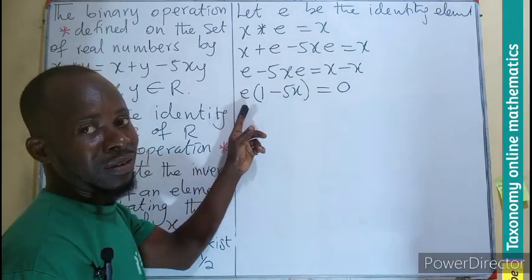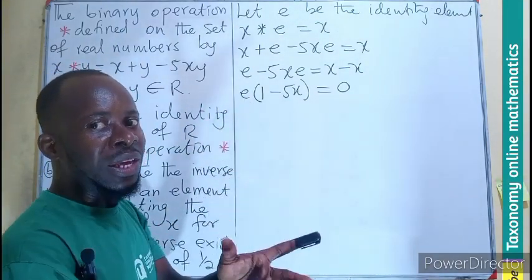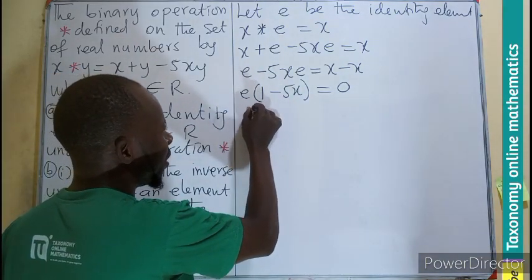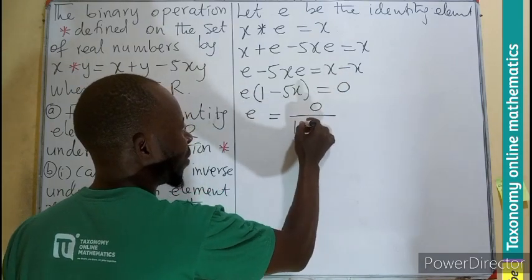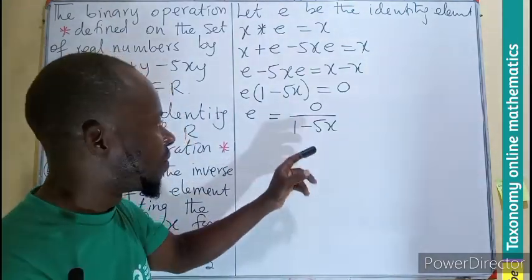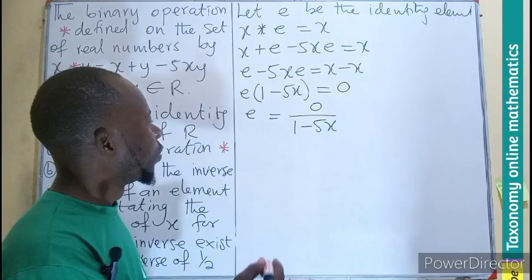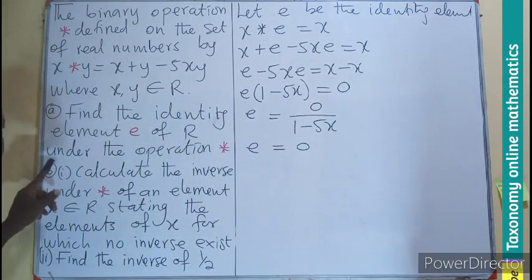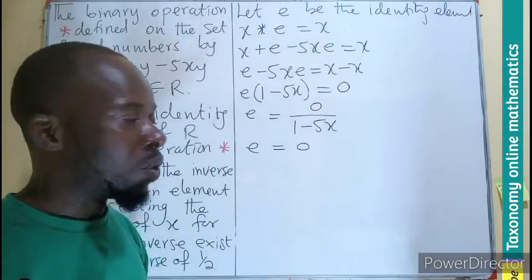Now, what do we do? We are looking for e. So the best way is to divide by the excess baggage multiplying it. So e will be equal to 0 divided by 1 minus 5x. And you can agree with me that if I divide 0 by any number, I will end up getting 0. So e is going to be 0. That's the first answer.